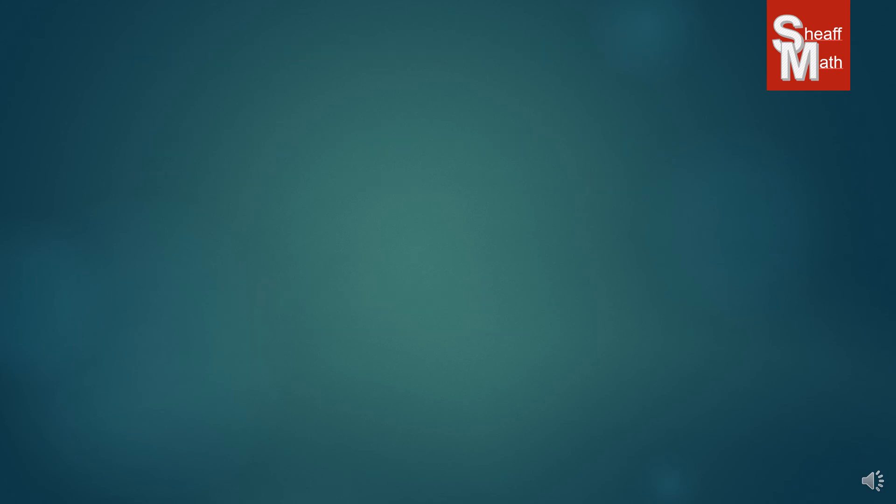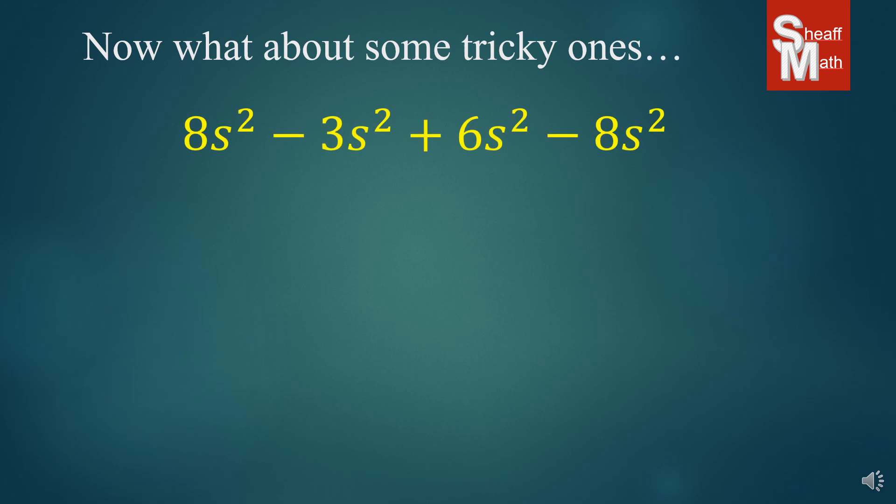Okay. Now let's look at some tricky ones. Some problems that always get thrown at you in these tests and quizzes. And so I'm going to go over a couple with you. This is the first one. What do you notice about this one? Well, they're all the same type of term. They're all s squareds. And so we just combine them together from left to right. 8 minus 3 is 5. 5 plus 6 is 11. And 11 minus 8 is 3 s squared. Okay. They do put this in quite a bit.